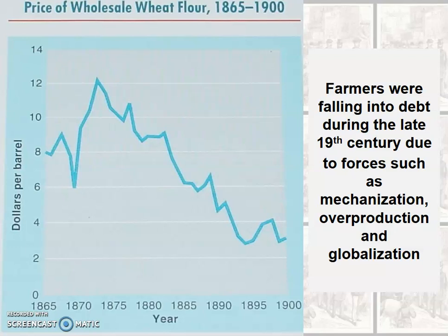Hi guys, welcome back to part two of lecture number five. We were talking about laborers organizing to defend their interests, and I want to turn now to American farmers. Why would farmers want to organize? What interests are they trying to defend? Well, if you recall our discussion around sharecropping in a previous lecture, we said that the economic fortunes of many farmers are declining during the late 19th century.